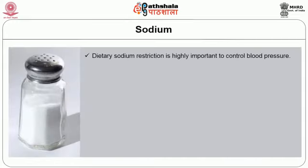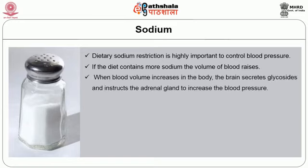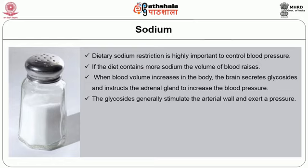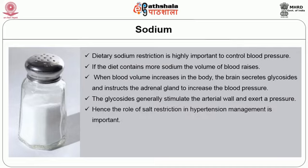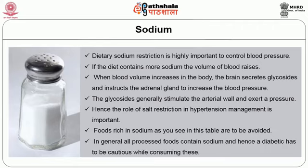The next important nutrient is sodium. Dietary sodium restriction is highly important to control blood pressure. If the diet contains more sodium, the volume of blood raises. When blood volume increases, the brain secretes glycosides and instructs the adrenal gland to increase blood pressure. The glycosides generally stimulate the arterial wall and exert pressure. Hence the role of salt restriction in hypertension management is important. In general, all processed foods contain sodium and a diabetic must be cautious while consuming these.